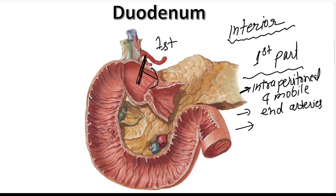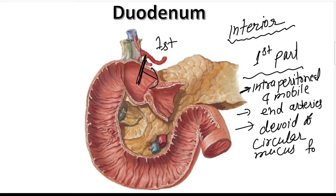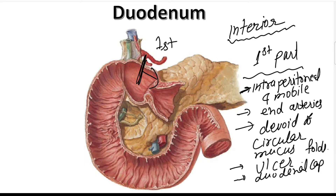The initial part — the duodenal cap — is devoid of circular mucosal folds. One more important point: the first part is more prone to ulcers, meaning duodenal ulcers commonly occur at the first part of the duodenum. So remember: the duodenal cap is also visible here.